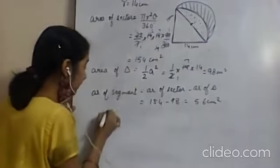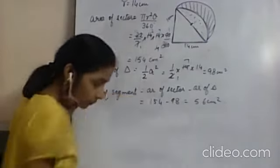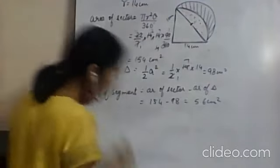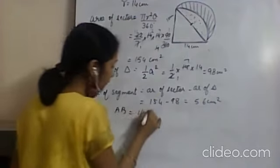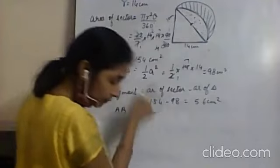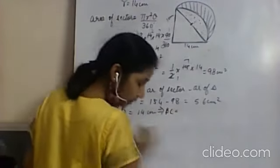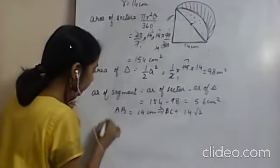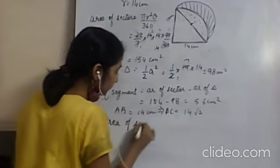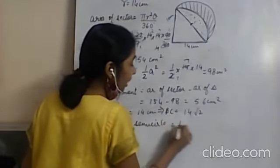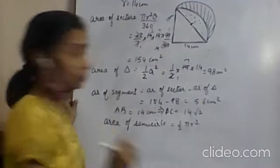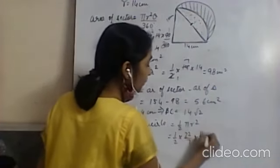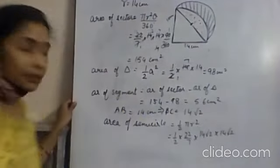Now we find the area of the semicircle. First find its radius: BC is the hypotenuse of the right triangle with AB equals BC equals 14 cm, so BC equals 14√2 cm. The diameter of the semicircle is 14√2, so radius equals 7√2. Area of semicircle equals half πr²: half into 22/7 into (7√2)².